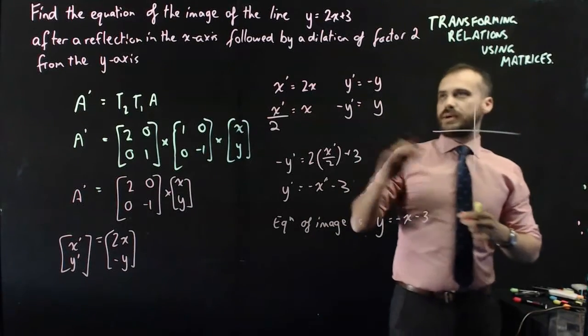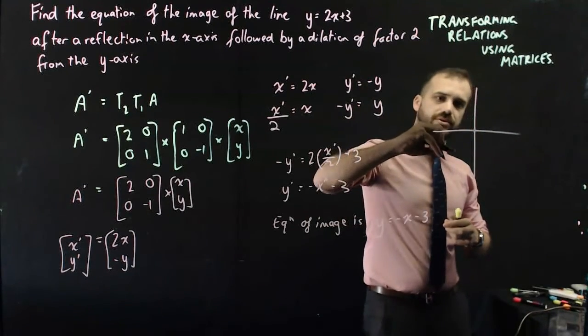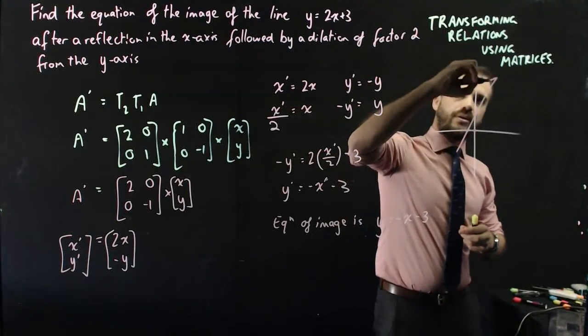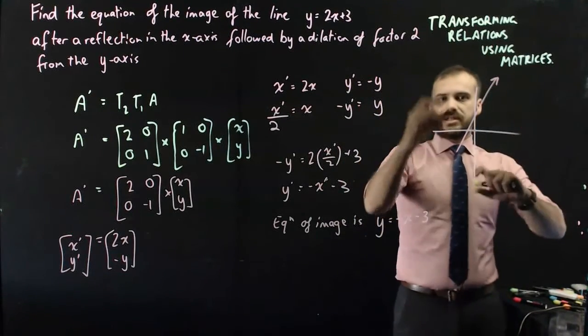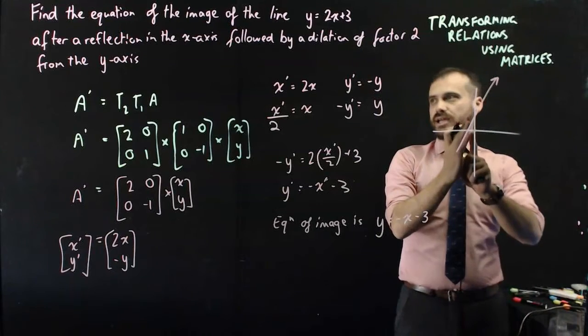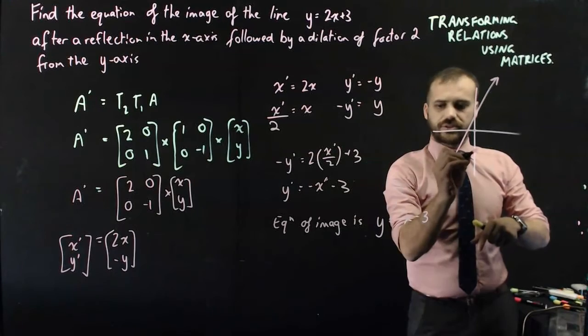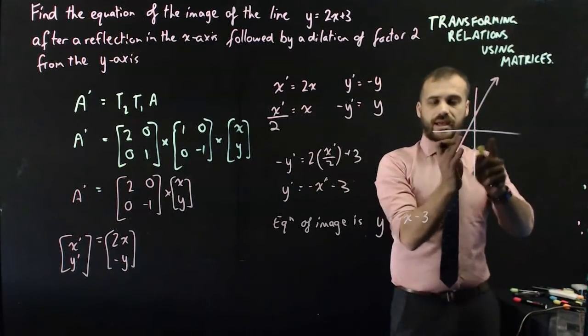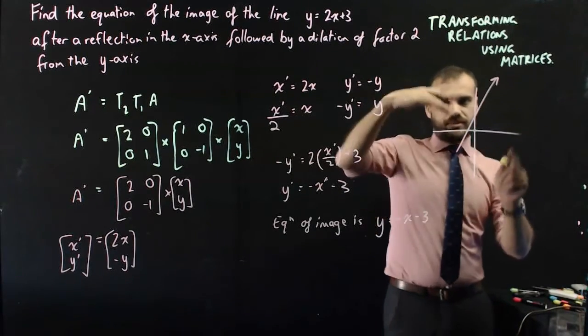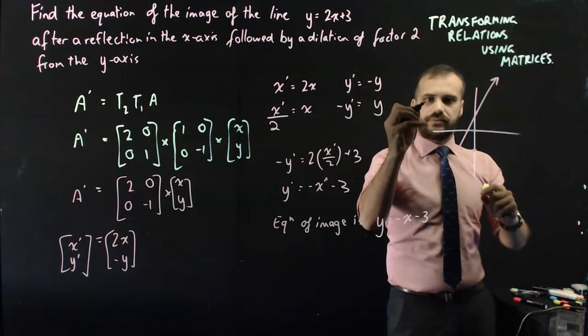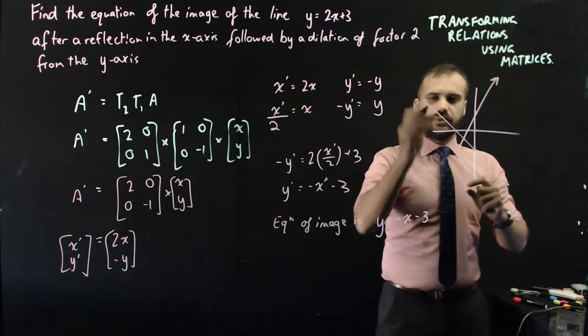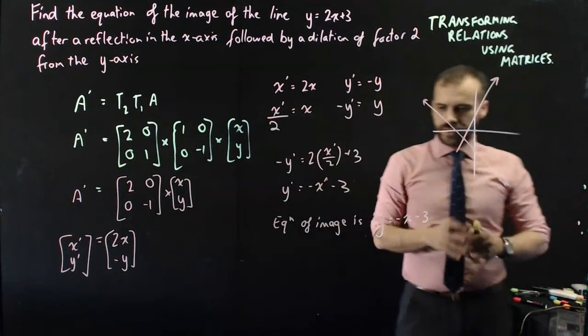And going back to the very beginning, y equals 2x plus 3 looked like this. If we reflect it in the x-axis and dilate it by a factor of 2 from the y-axis, what we get is something that passes through negative 3 and is half as steep in the negative direction. Which is about what I drew before, I think.